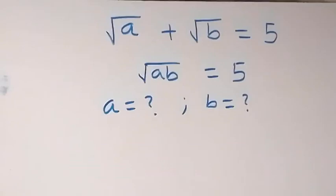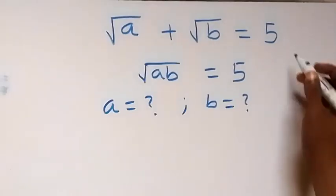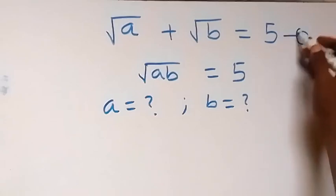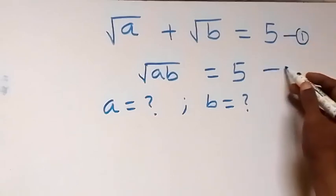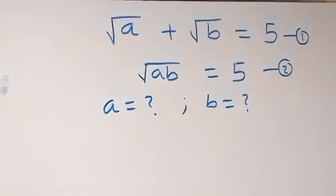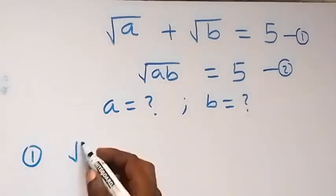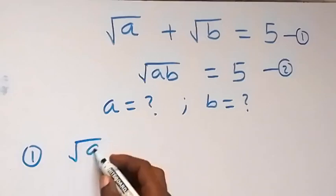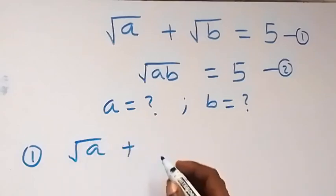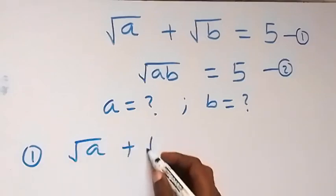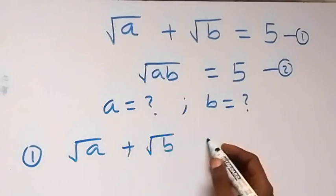Hello and welcome. How to solve this nice system of equations to find the value of A and B? Let this be equation 1 and this be equation 2. From equation 1, we have root A plus root B equals 5.